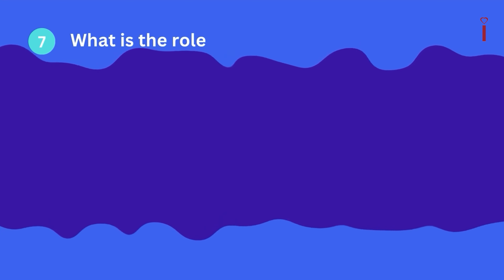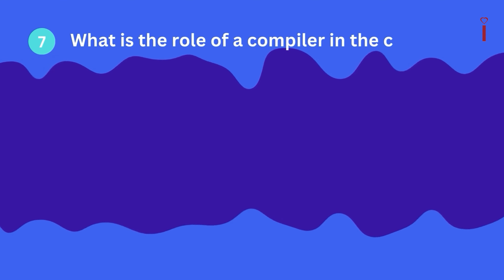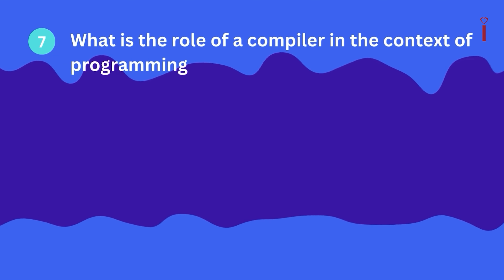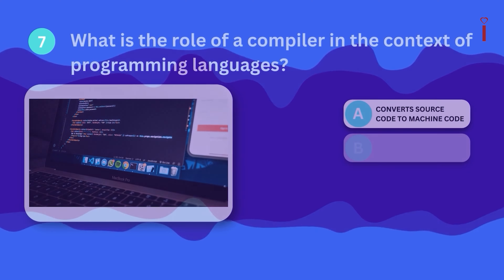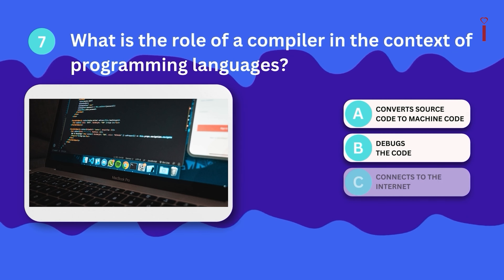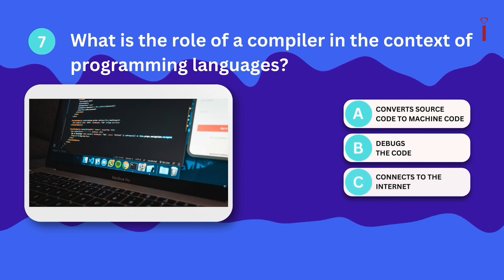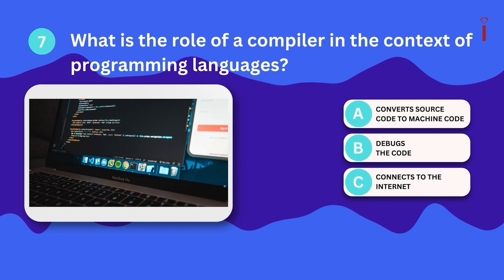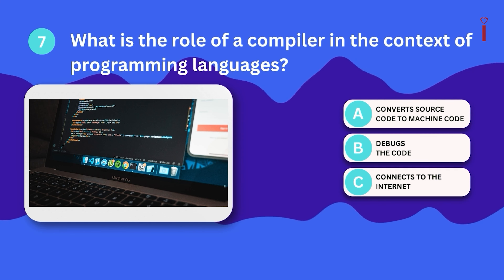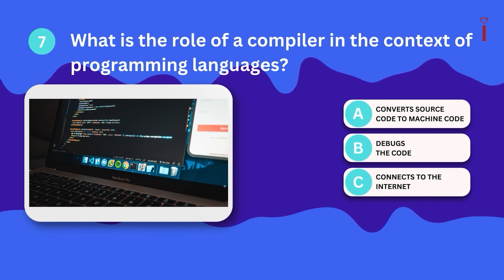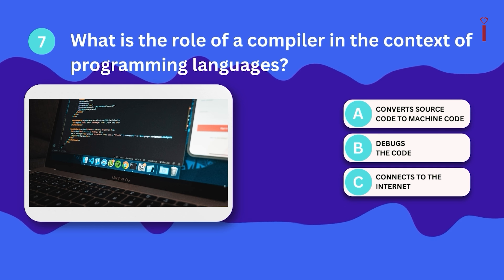Question 7: What is the role of a compiler in the context of programming languages? A. Convert source code to machine code, B. Debugs code, C. Connects to the internet?